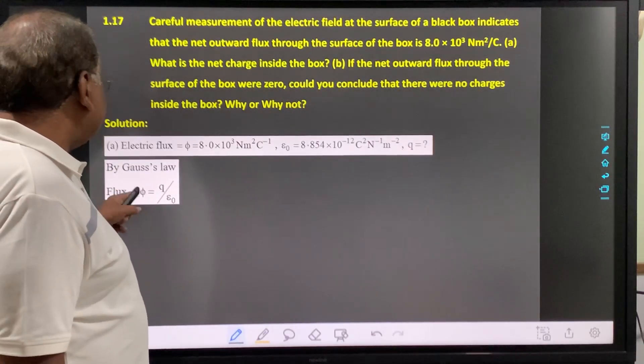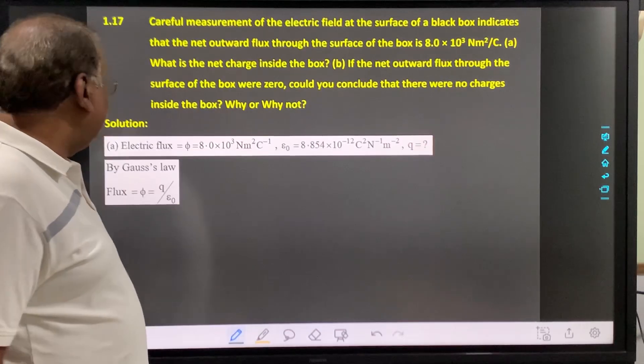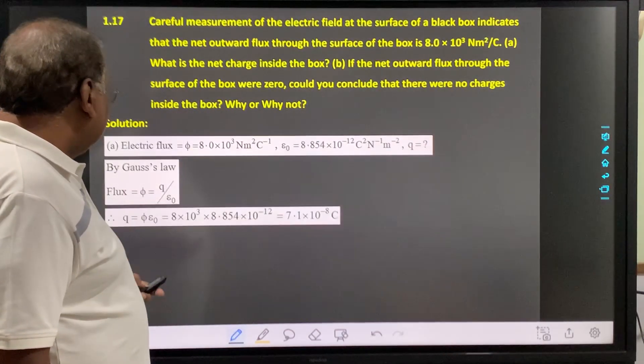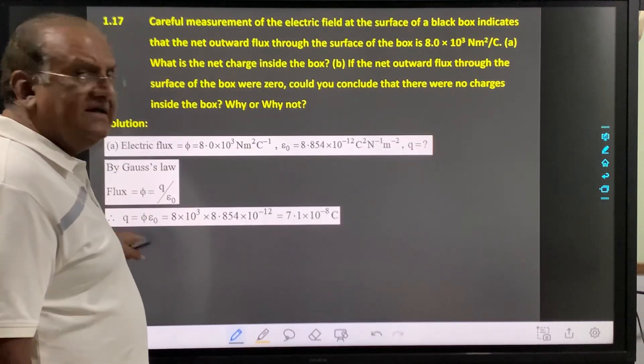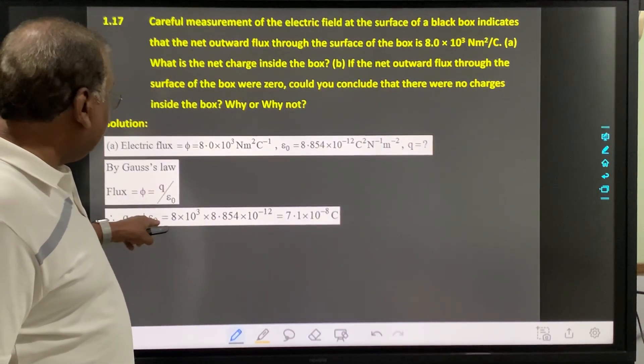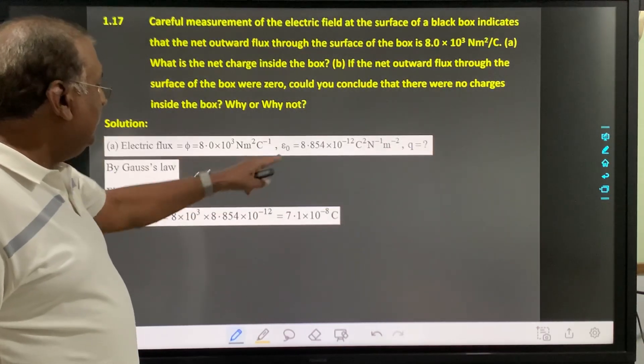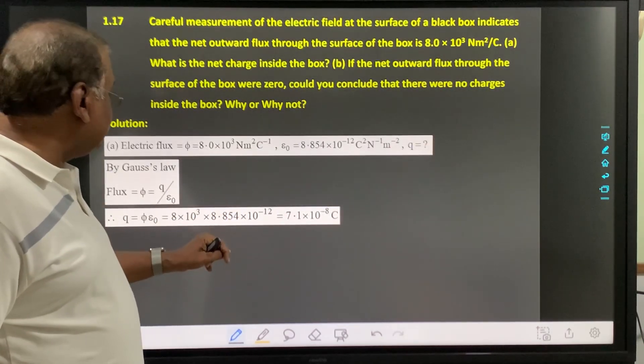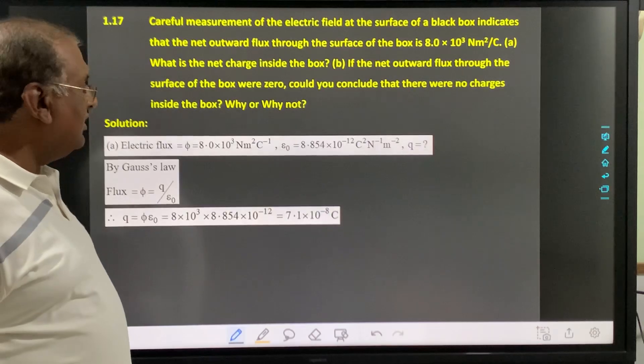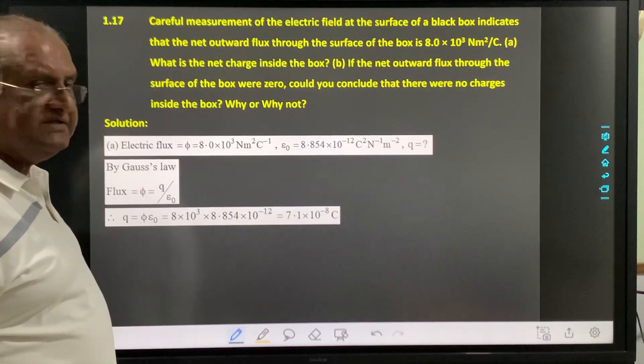As per Gauss's law, we know flux phi equals Q divided by epsilon 0. So we can write Q, the net charge enclosed by the Gaussian surface, as phi times epsilon 0. Substituting the values and solving, the answer is 7.1 × 10⁻⁸ coulomb.